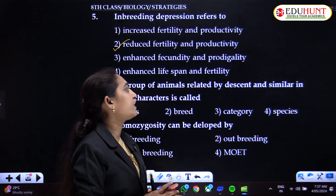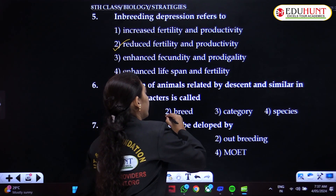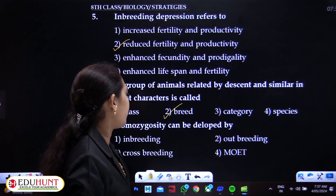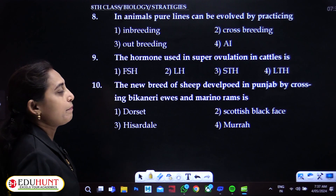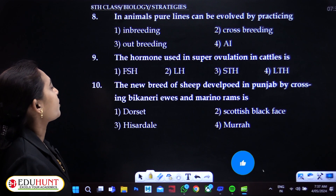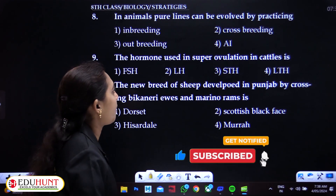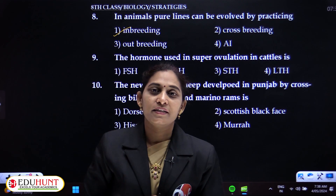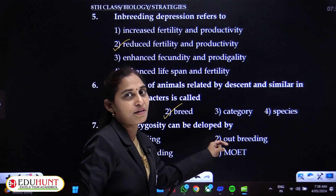A group of animals related by descent and similar in most characters is called a breed. Homozygosity can be developed by inbreeding. In animals, pure lines — which are homozygous individuals — can be evolved by practicing inbreeding.